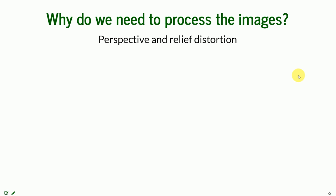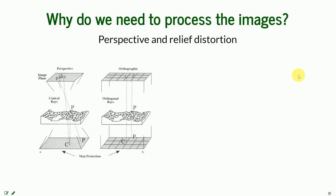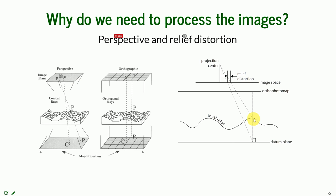Two things need to be addressed when we talk about processing images: perspective and relief distortion. The rays need to be straightened so that a point on the ground will be in the same location as the point on the map — the rays need to go orthogonally instead of conically. The other thing is that if you take into account the datum plane and the relief, you can see how differently features will be depicted on the photo because of the projection.